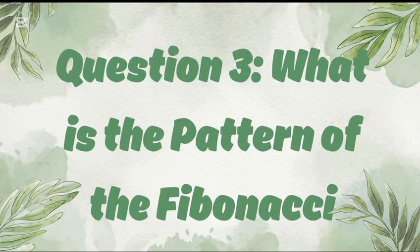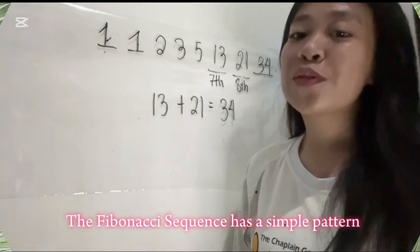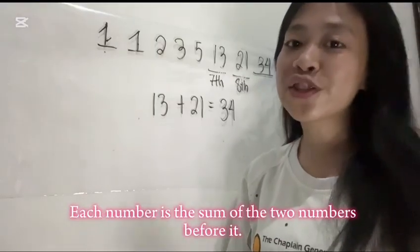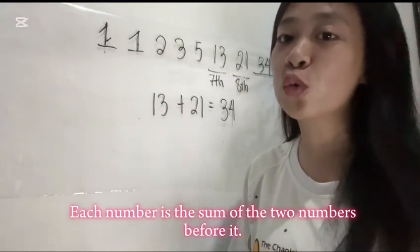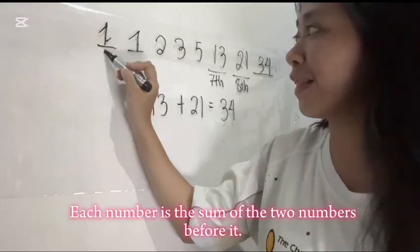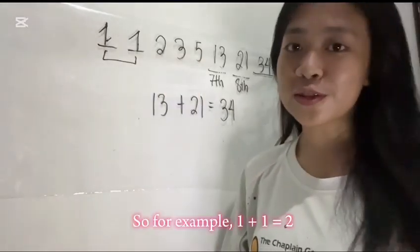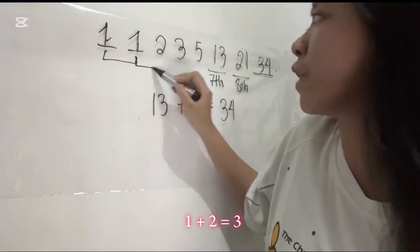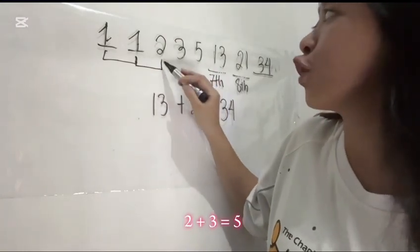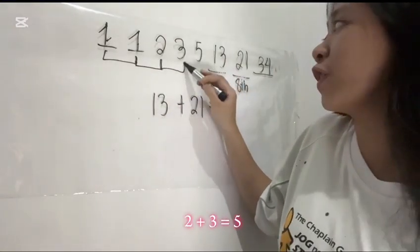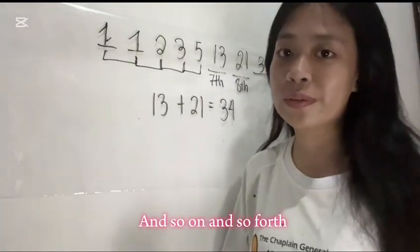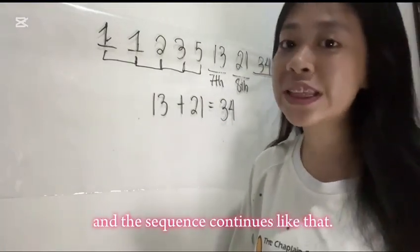Question number 3. What is the pattern of the Fibonacci? The Fibonacci Sequence has a simple pattern. Each number is the sum of the two numbers before it. For example, 1 plus 1 equals 2. 1 plus 2 equals 3. 2 plus 3 equals 5. 3 plus 5 equals 8. And so on and so forth. The sequence continues like that.